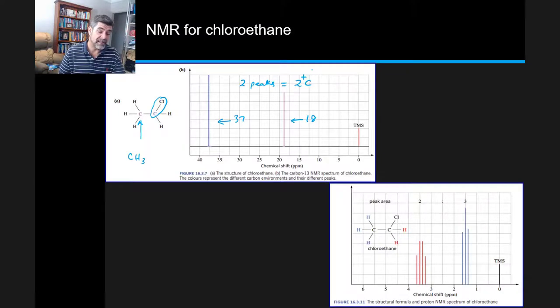Because that chlorine is there, that means we have one carbon where the hydrogens are attached to a neighbour with three hydrogens, and therefore that is going to produce an output with four peaks. So three plus one is four.